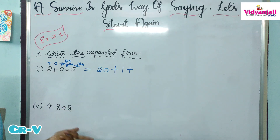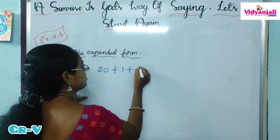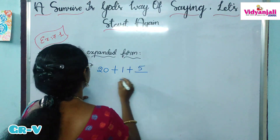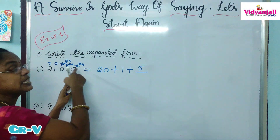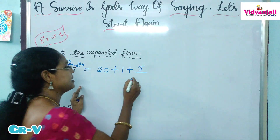When we have 0's, we can avoid that — no need to write. So 5 is in the 1000ths place, so 5 by 1000.